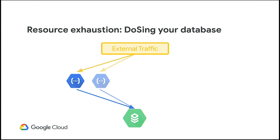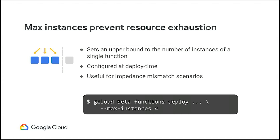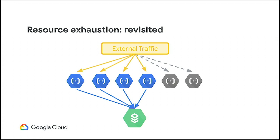A common issue with functions is impedance mismatch — we scale up but backend resources like SQL databases can't. You can run out of file descriptors when too many front-end machines try to connect. We provide a tool to set a maximum number of running functions. Since functions are single concurrency, you can say 'I want four instances because my backend can only handle four concurrent connections.' We set that upper bound, and above it we apply backpressure — queuing requests, not dropping them, processing four at a time.